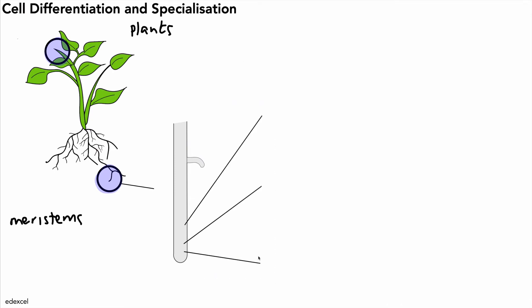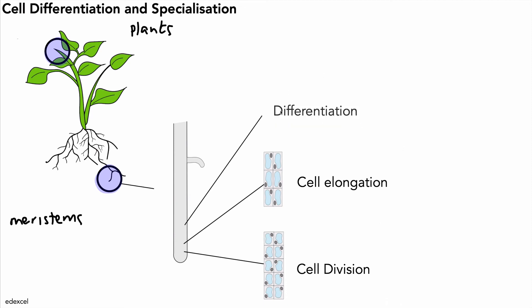what we'll see is right at the very tip, we get cell division, including mitosis. Further up, the cells elongate, so we call that cell elongation, and then we have cell differentiation. And again, differentiation leads to the production of specialized cells. In this case, we've got xylem and phloem.